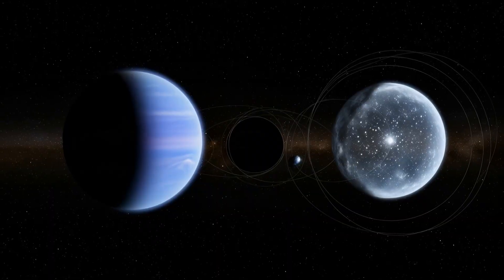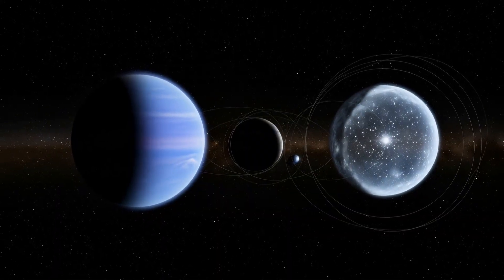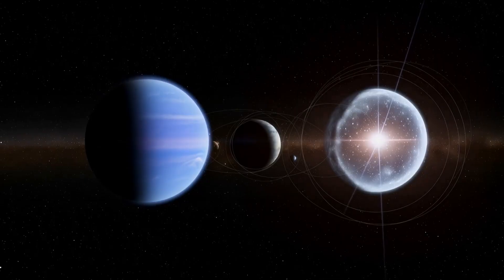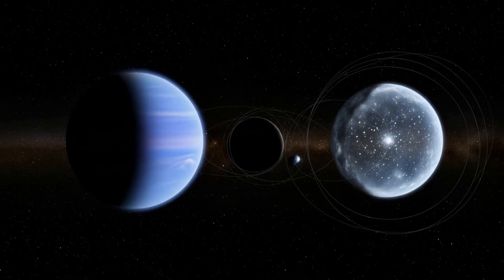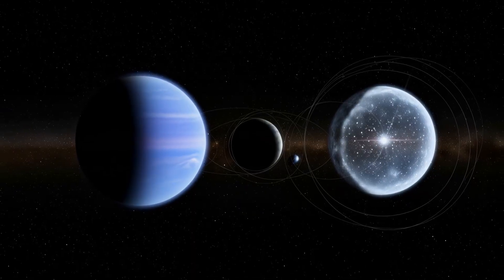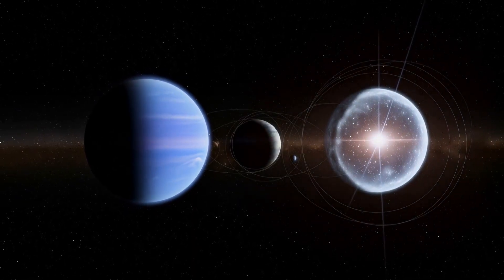The clues are there, etched into the warped paths of worlds at the edge of darkness. So what seems more likely to you, a hidden giant planet shaping the solar system's edge, or a cosmic phenomenon we've yet to comprehend?